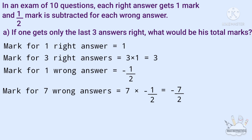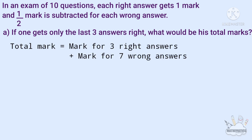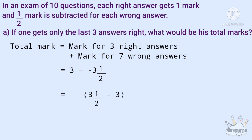7 by 2 is equal to 3 and a half, so this is minus 3 and a half. Total mark is mark for 3 right answers plus marks for 7 wrong answers, that is 3 plus minus 3 and a half. The result is negative: 3 and a half minus 3 equals a half, so this is minus 1 by 2, that is minus half.